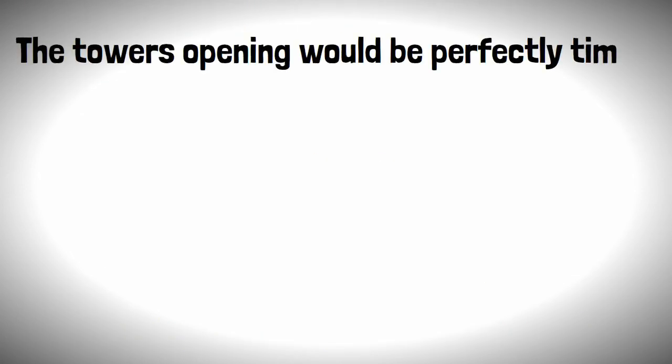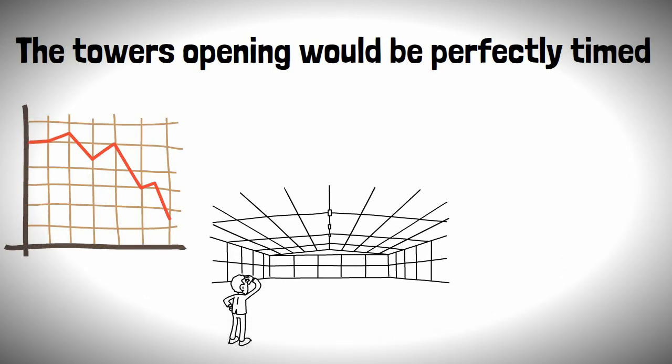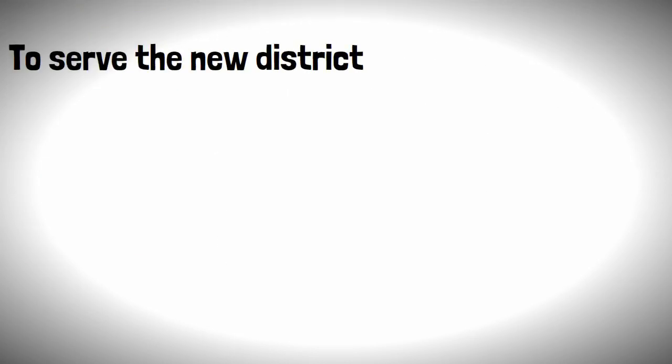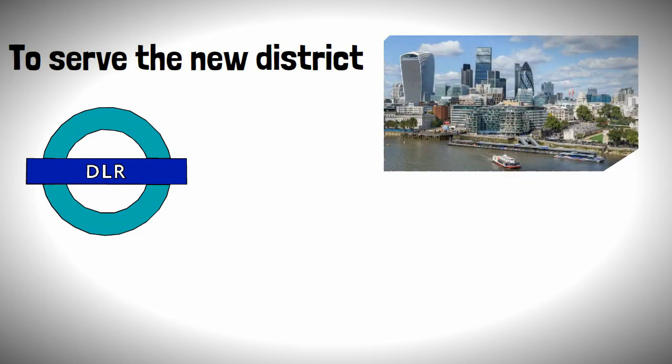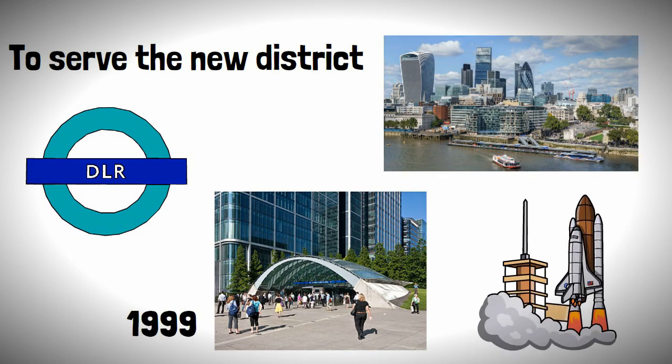The tower's opening would be perfectly timed right in the middle of a recession, leaving the building largely unoccupied and the developer of Canary Wharf bankrupt. To serve the new district, an extension of the Docklands Light Railway was built providing access to the City of London. However, it was the arrival of the Jubilee Line in 1999 that would see the area really start to kick off.